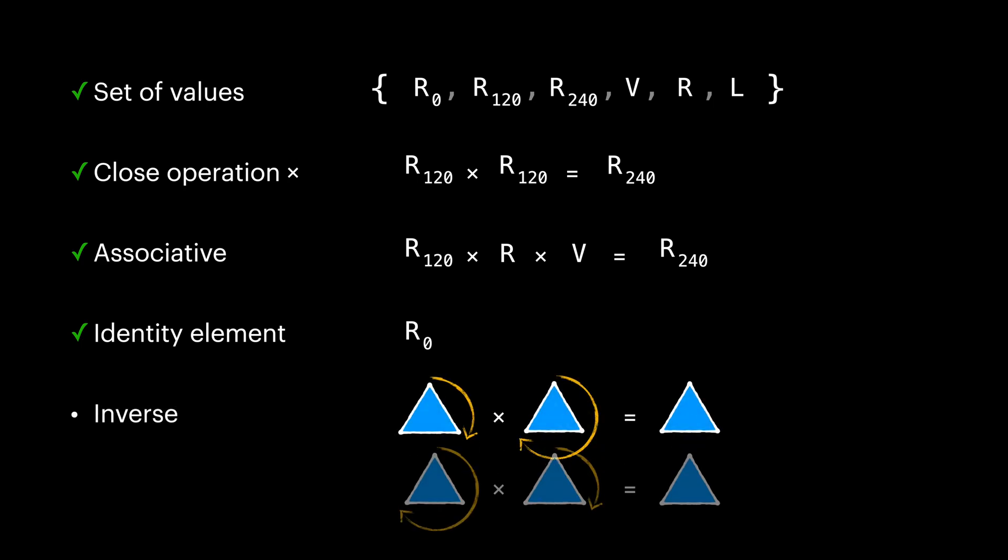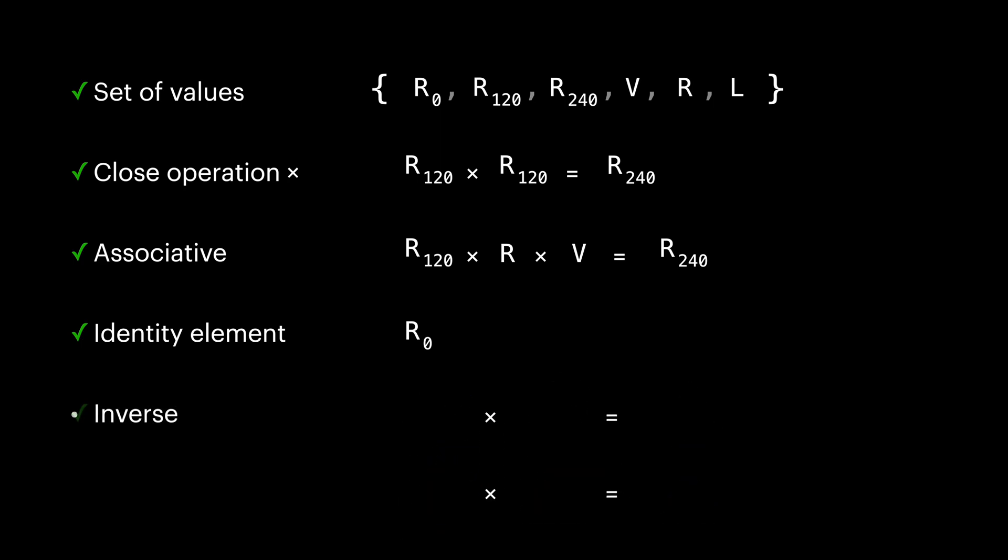And for every action, we have a unique action that by composing them, it neutralizes their effect and gives us the identity element. So after all this, we can say triangle transformations and their composition is a group.